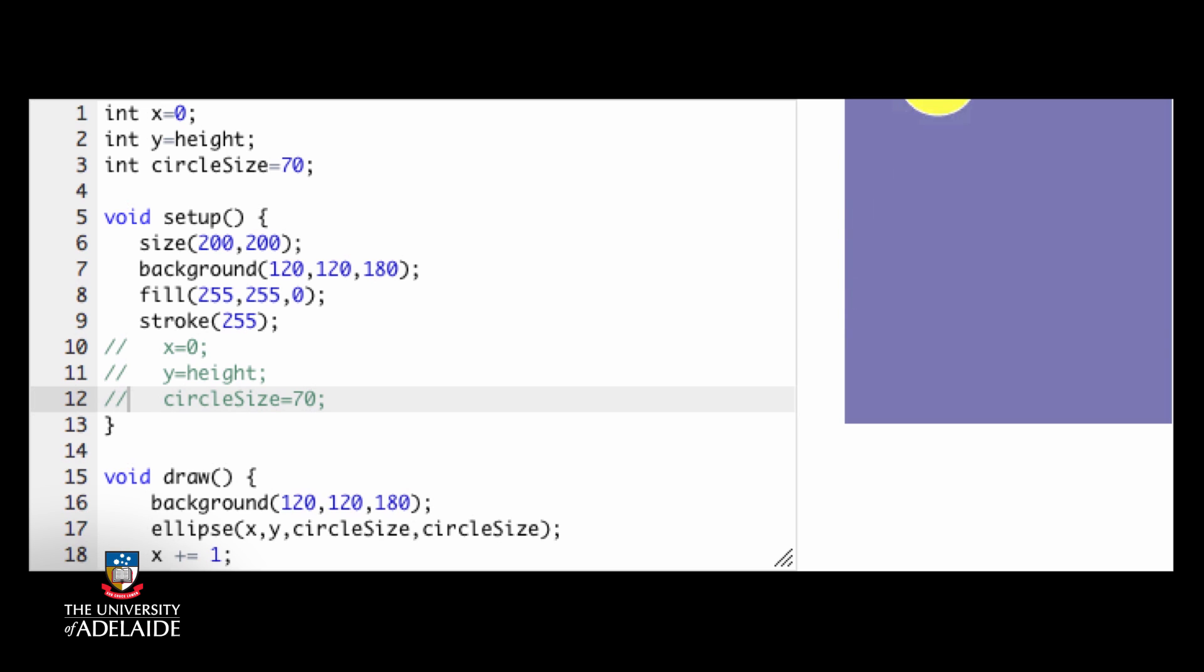Running this gives us a strange result. The sun starts off at the wrong position, disappears off the screen, then comes back, and from that point on, is in the right position. Can you guess what happened?